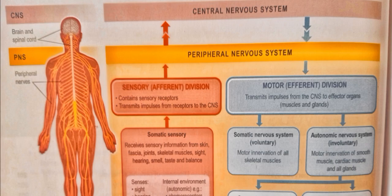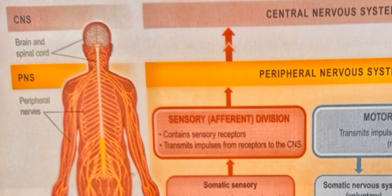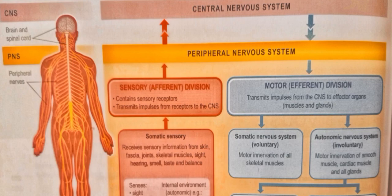Our nervous system is divided into two types: the central nervous system and the peripheral nervous system. The brain and the spinal cord together form the central nervous system — these are the main, central components. Every subdivision beyond that is the peripheral nervous system. Peripheral means extending to the body surface, forming the nerves that go out to the periphery. PNS handles stimulus and response.